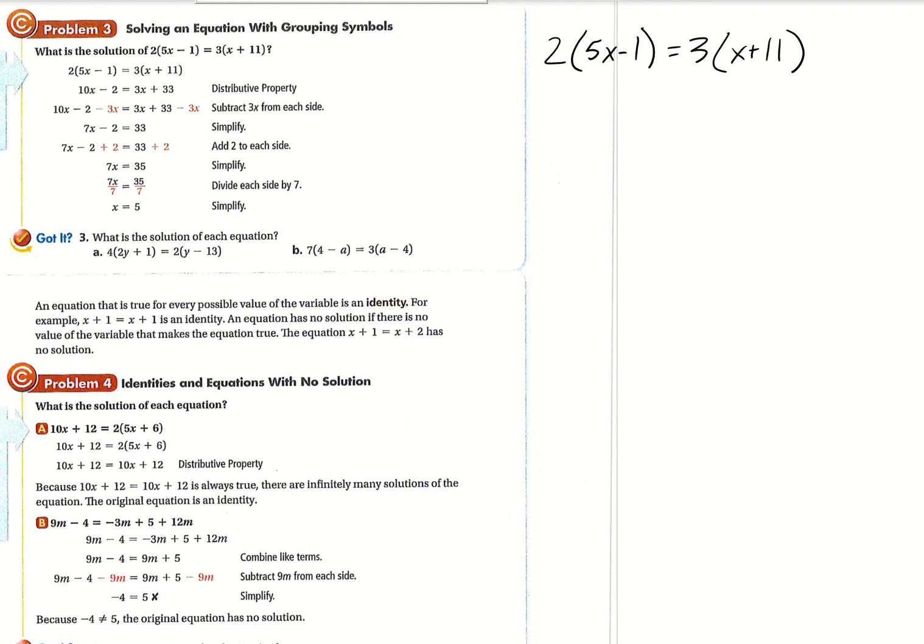And then we're just going to go ahead and solve the best way to do this one is to use distributive property. So you're going to do two times five X and two times negative one. So that's going to give you 10X minus two on this side. On the other side, you've got three times X, which is three X and then three times 11, which is 33. And now we just solve like normal.